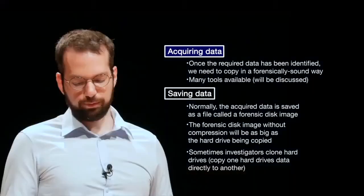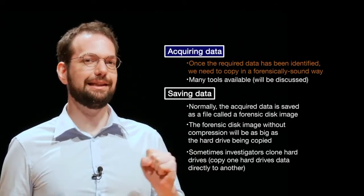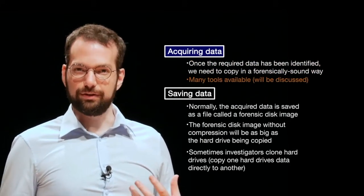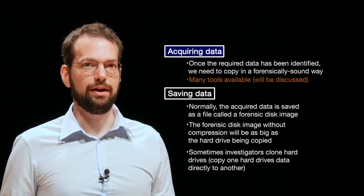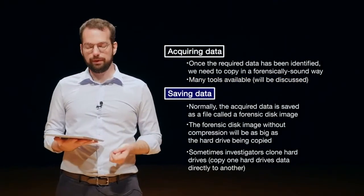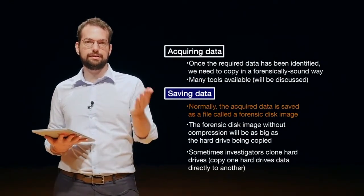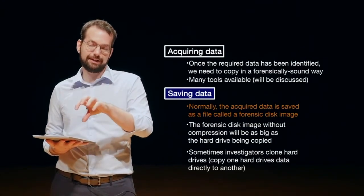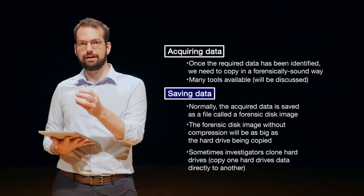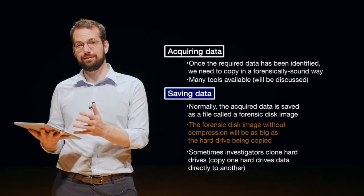When acquiring data, once the required data has been identified, we need to copy it in a forensically sound way using a proper procedure. There are many digital forensic tools available to help collect data forensically. Normally, the acquired data is saved into a file called a forensic disk image — we copy all of that data bit for bit into a file containing exactly the same data as the hard drive. Without compression, the file size will be exactly the same as the physical disk, so these images get very large. If we have a one terabyte hard drive, we will have a one terabyte forensic disk image.